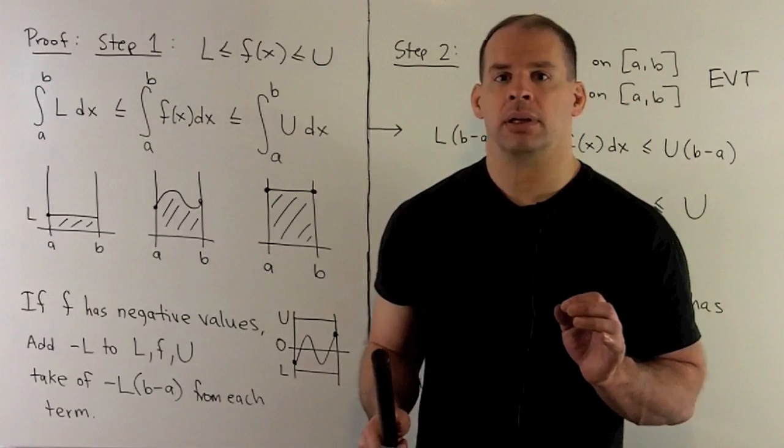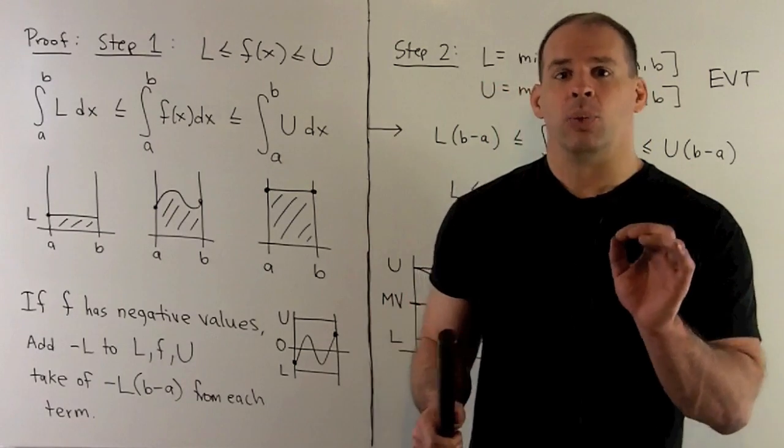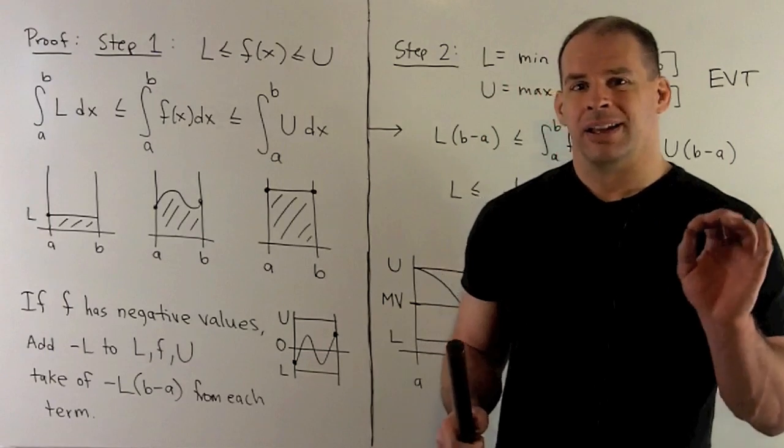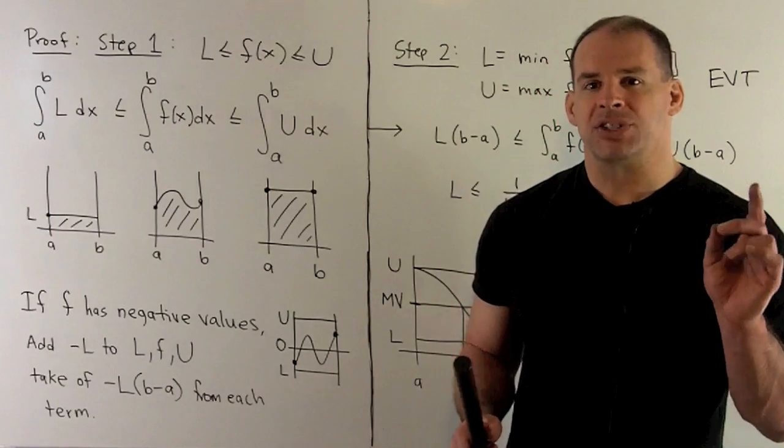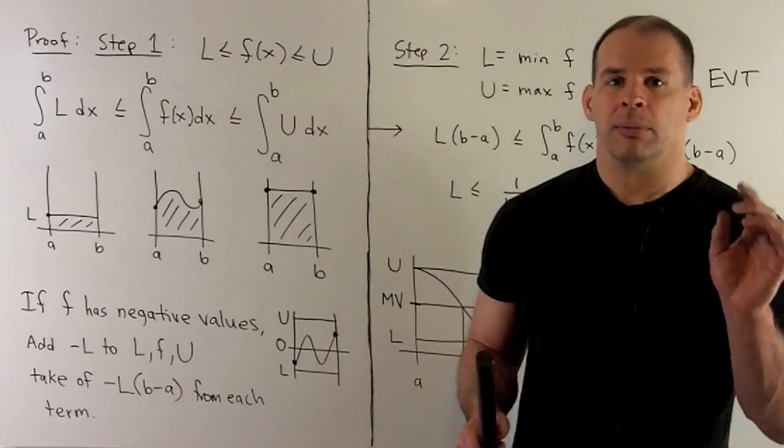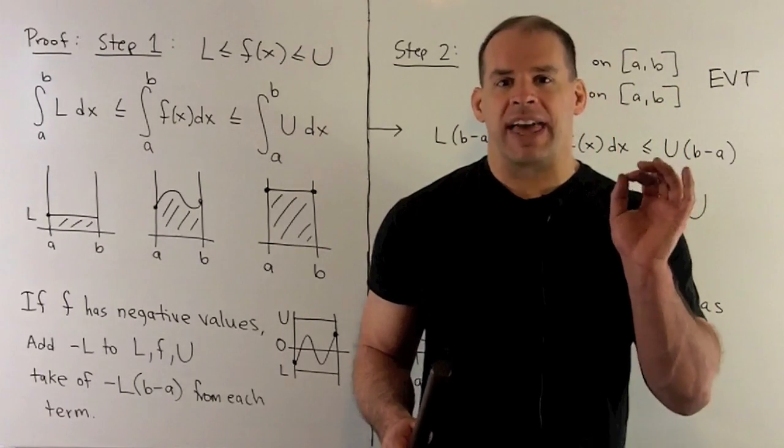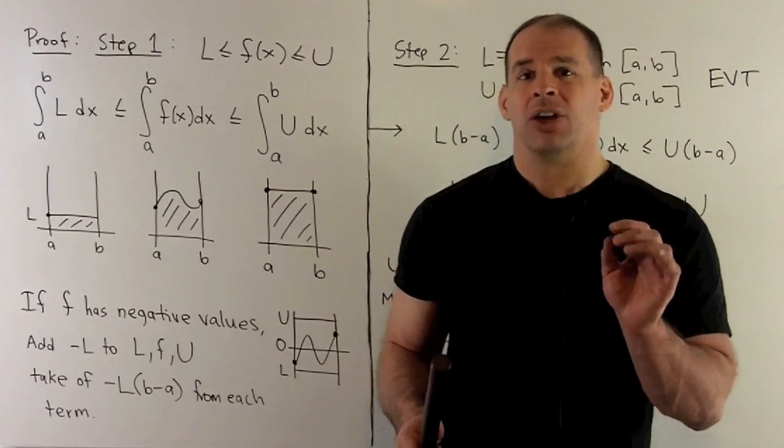So, believable. Now, if we allow for negative values, we're talking about net areas here, maybe not so easy to believe. But, the inequalities are still going to be true. So, the way you see that is just by using your old case.